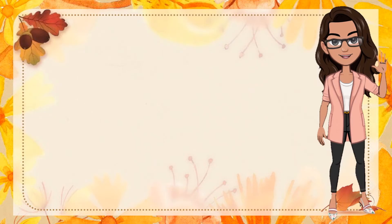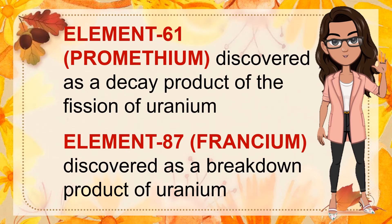The two other elements with atomic numbers 61 and 87 were discovered through studies in radioactivity. Element 61, promethium, was discovered as a decay product of the fission of uranium, while element 87, francium, was discovered as a breakdown product of uranium.